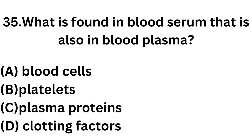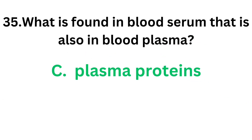Question number 35: What is found in blood serum that is also in blood plasma? That means what is found in serum that is also in plasma? Option A: Blood cells. Option B: Platelets. Option C: Plasma proteins. Option D: Clotting factors. The correct answer is Option C, plasma proteins. Plasma proteins can be found in both serum and plasma.